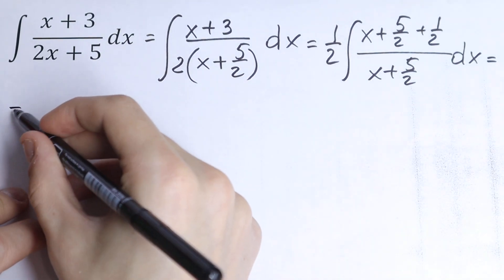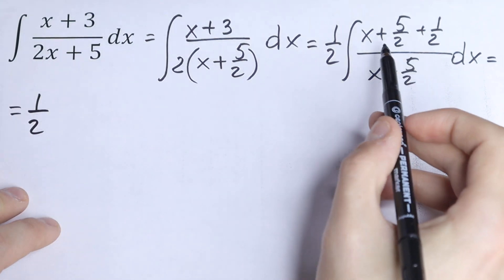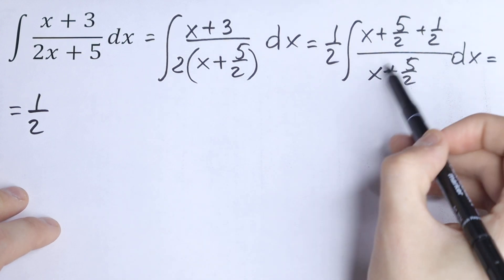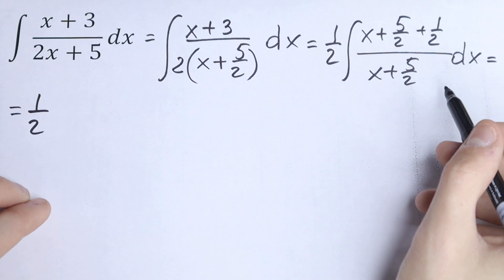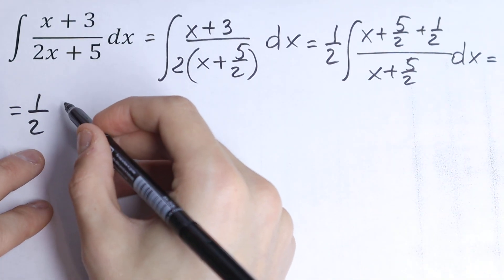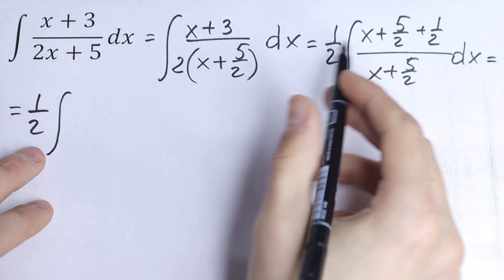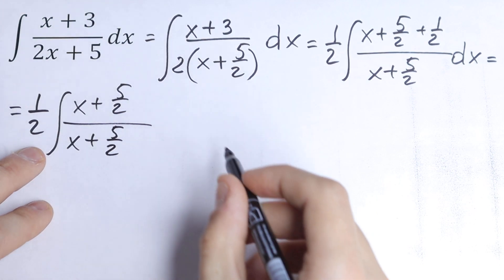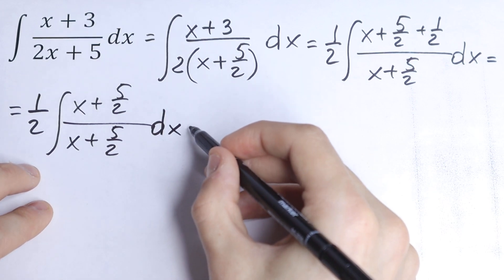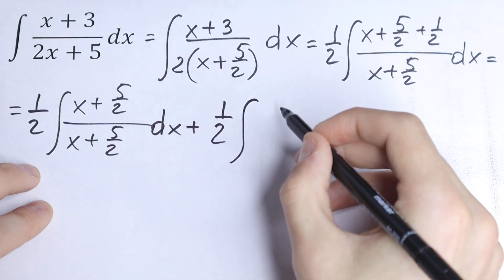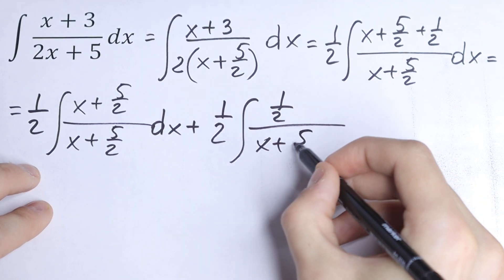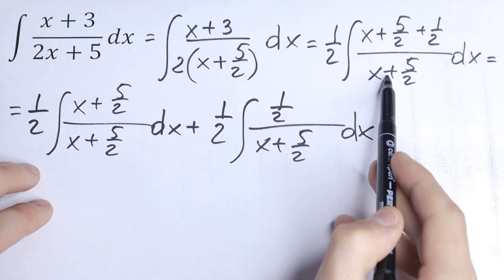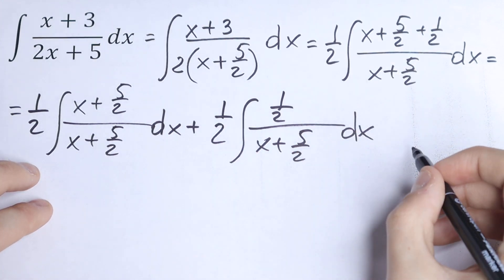This will be equal to one half times the integral. We can divide (x + 5/2) by (x + 5/2) and the same for the plus 1/2 term. So we will have one half times the integral of (x + 5/2) over (x + 5/2) dx, plus one half times the integral of (1/2) over (x + 5/2) dx. We just divide each term by our denominator, and adding them back gives us the same thing.